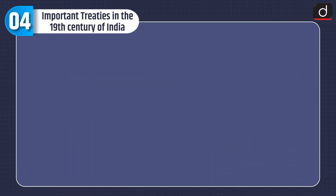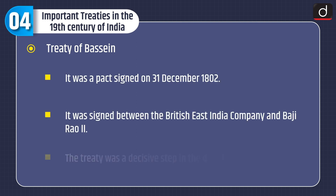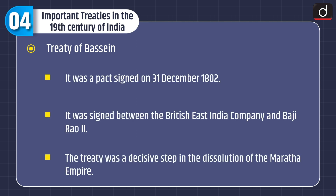Now moving on to important treaties in the 19th century of India. First is the Treaty of Bassein. It was a pact signed on 31 December 1802 between the British East India Company and Baji Rao II. The treaty was a decisive step in the dissolution of the Maratha Empire.